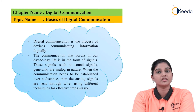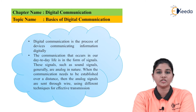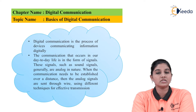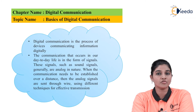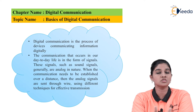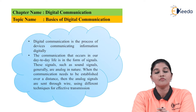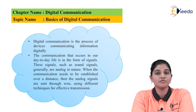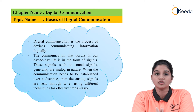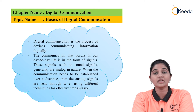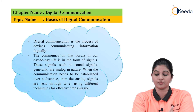The digital communication system is a system in which information is exchanged in the form of digital information, that is by using machine language, which is nothing but ones and zeros. We can take the example of a computer, in which the signal is transmitted in the form of ones and zeros — also called machine language. So the system which uses ones and zeros is called a digital system.